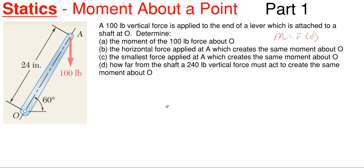What we have here is a 100-pound vertical force applied to the end of a lever, which is attached to a shaft at point O, as shown. We have four parts to determine. Part A: determine the moment of the 100-pound force about point O. So moment is just force times a perpendicular distance. Our force is 100 pounds and it is in the vertical direction.